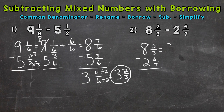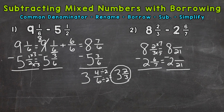We have eight and how many twenty-firsts minus two and how many twenty-firsts? We know that three times seven is 21, so we need to do the same thing to the top to keep this equivalent. Two times seven is 14. We know seven times three is 21, so we do the same to the top: six times three is 18.